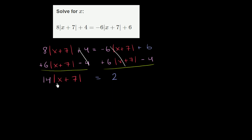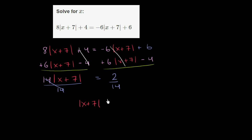Now, just as promised, we want to solve for the absolute value of x plus 7. So let's divide both sides by 14 to get rid of that factor — the thing that's multiplying the absolute value of x plus 7. So we'll divide both sides by 14, and we are left with the absolute value of x plus 7 is equal to 2 over 14. They're both divisible by 2, so this is the same thing as 1 seventh. We have now solved for the absolute value of x plus 7.